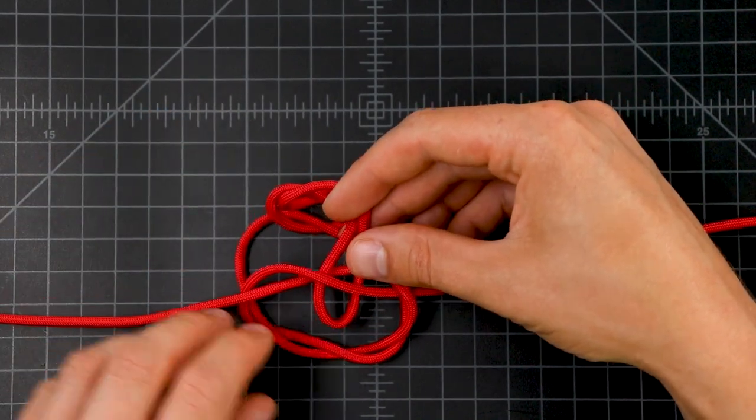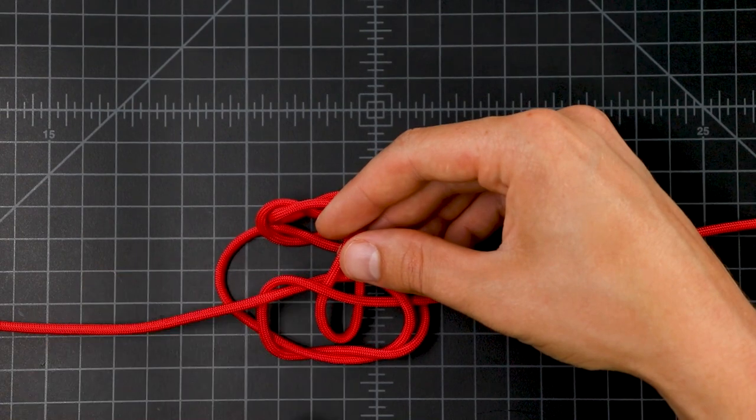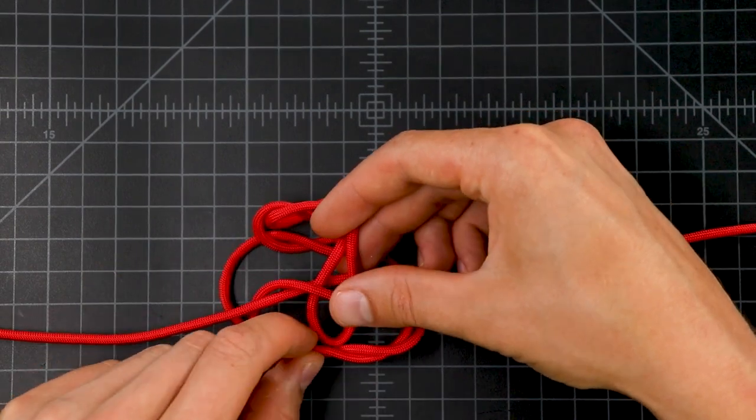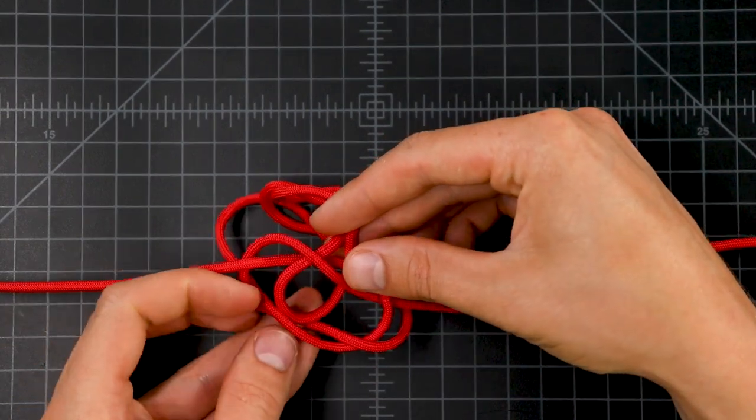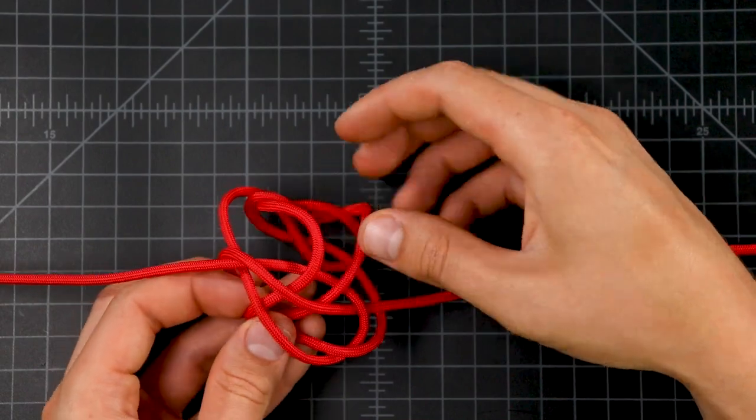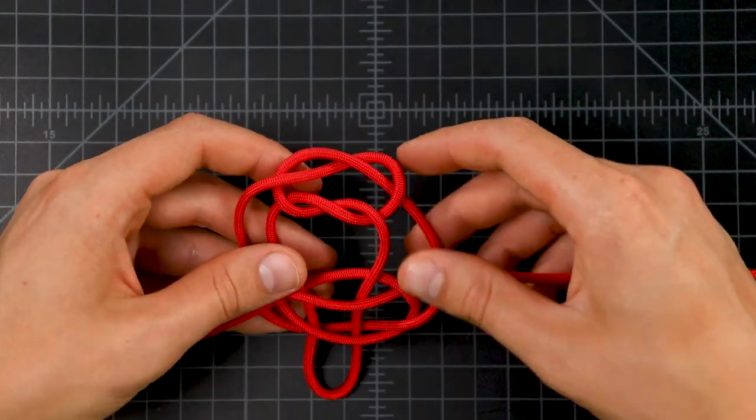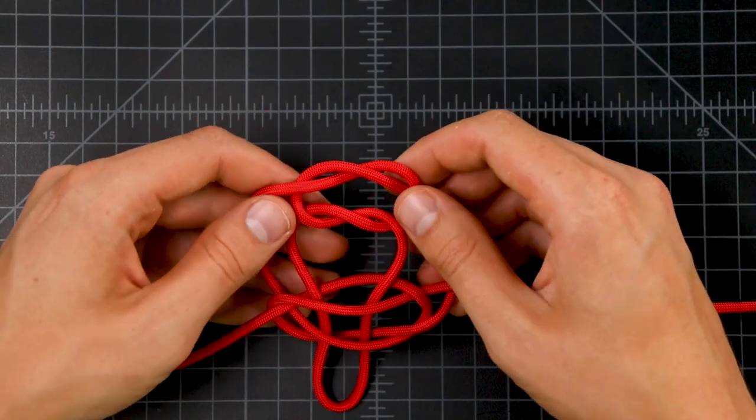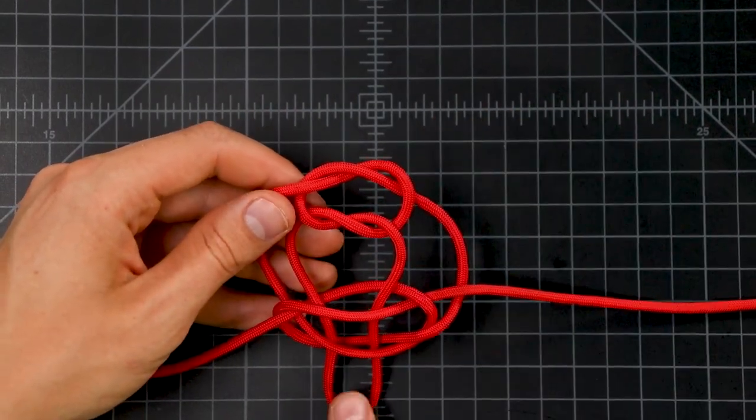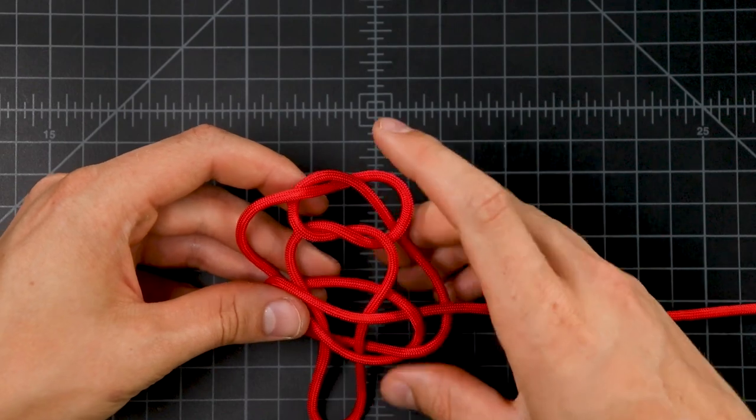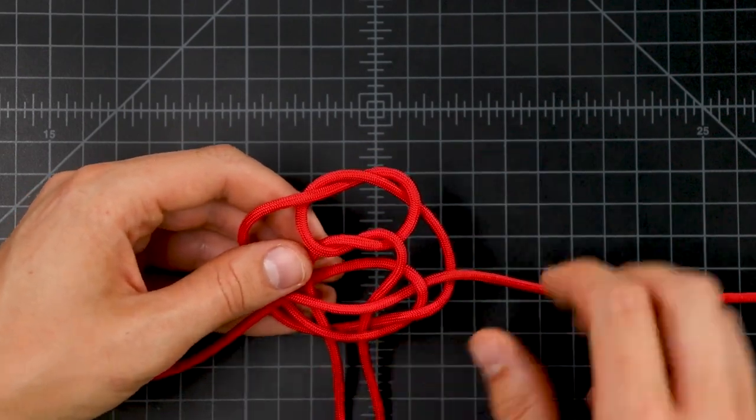And then the same with our bottom cord. You want to make sure that you're actually hitting the middle of that knot. So now we've got a mess on our hands, but it's actually a pretty symmetrical mess.